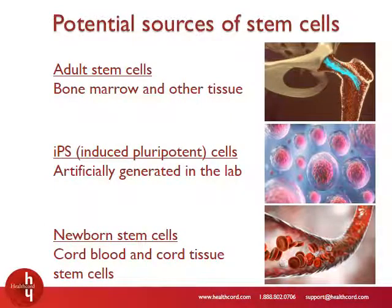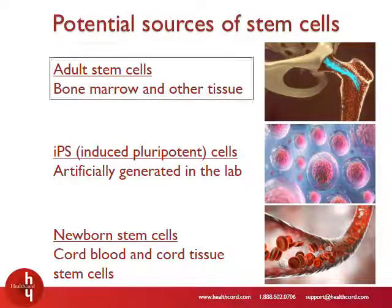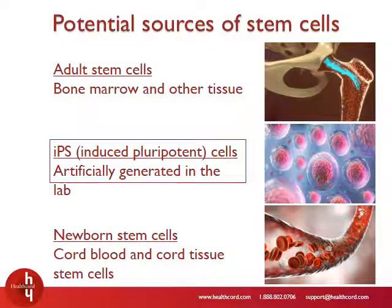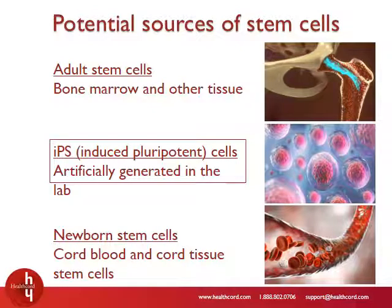I will end this section by highlighting some of the potential stem cell sources available for cell therapies. These include adult stem cells, which can be isolated from the bone marrow and a variety of other tissues. Isolating adult stem cells can be difficult because the number of stem cells in our body decreases as we age. Induced pluripotent stem cells, or iPS cells, are another source that's been widely explored in the lab. These are stem cells made in the lab by reverse-engineering adult cells.